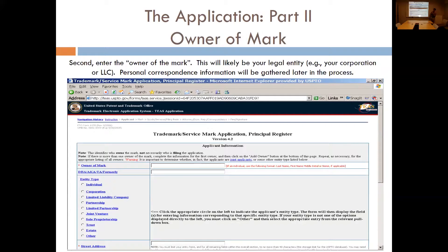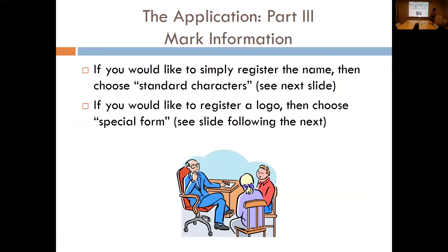Now we're going to dive into the application process itself. The web design of the USPTO registration system is a bit dated, but it loads quickly. Step one: you'll be writing down who the owner of the mark is — whether it's the corporate or LLC entity, or you as an individual. Here you'll also choose whether this is a word mark — essentially a slogan, name, or phrase that is purely text — or if there's a logo as well.